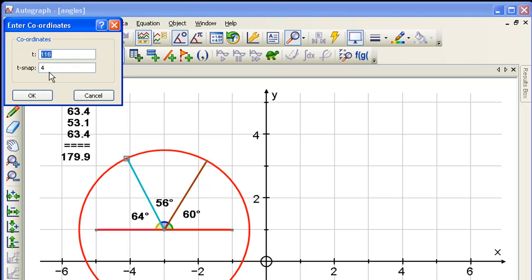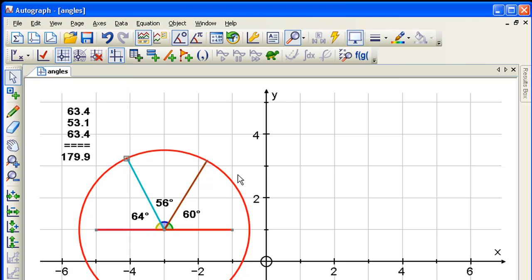We could for example set that to 90, and you've got three angles which have been correctly displayed, correctly measured, and they do indeed add up to 180.